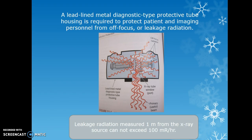Lead-lined metal diagnostic tube housing is required to protect the patient and imaging personnel from off-focus or leakage radiation. Leakage radiation comes from the tube in all directions, though most is focused out through the shutters via the collimator. Even with lead lining, some leakage occurs, and it cannot exceed 100 mR per hour measured one meter from the x-ray source. Engineers at hospitals can check this periodically.